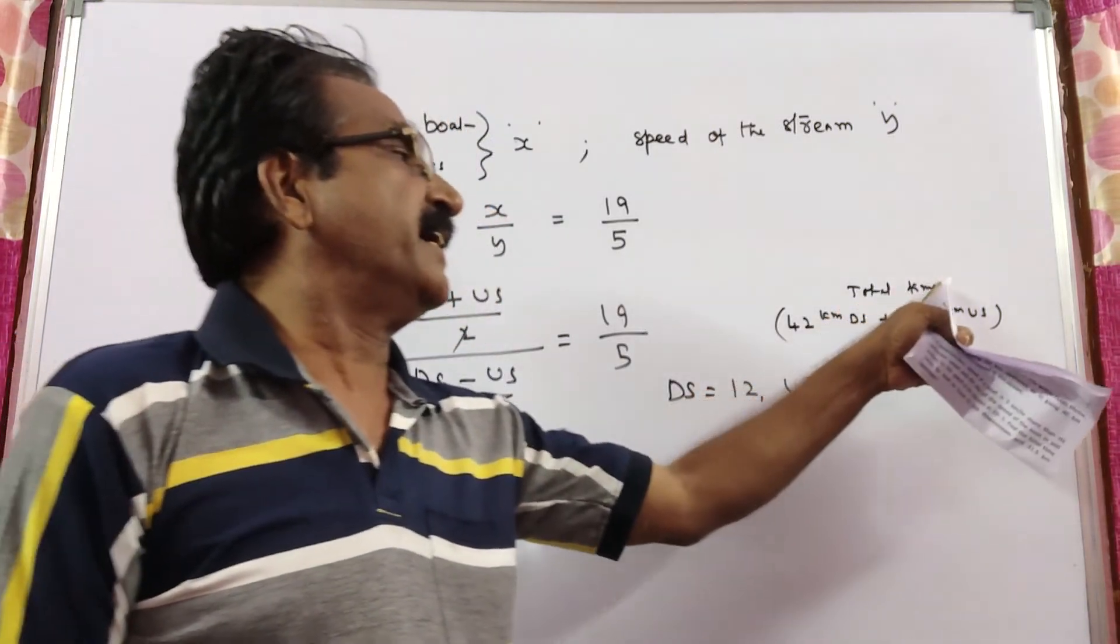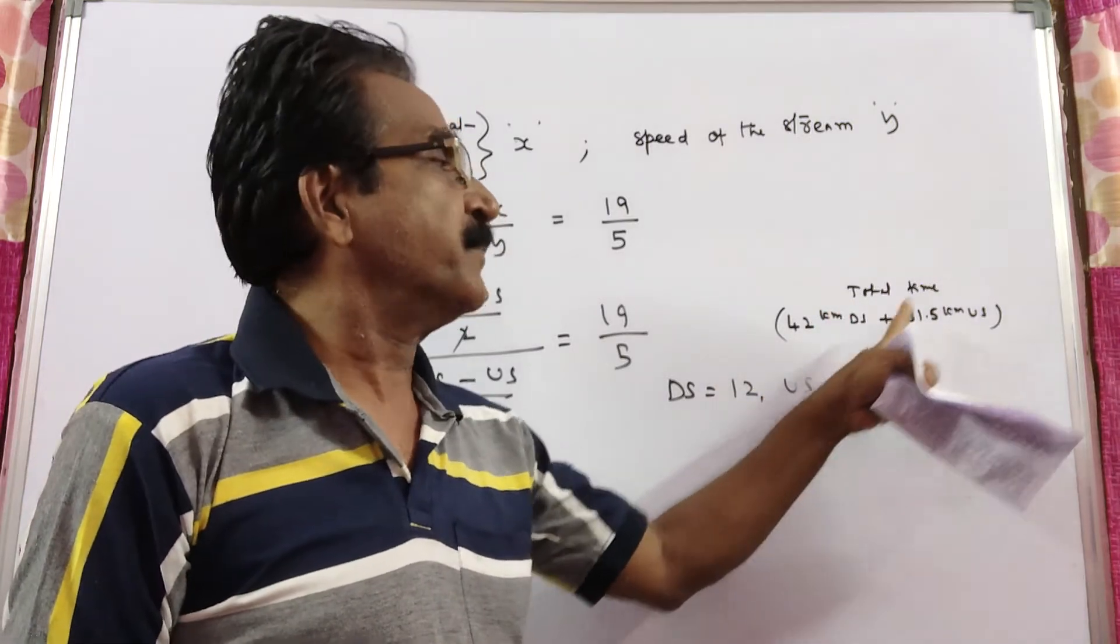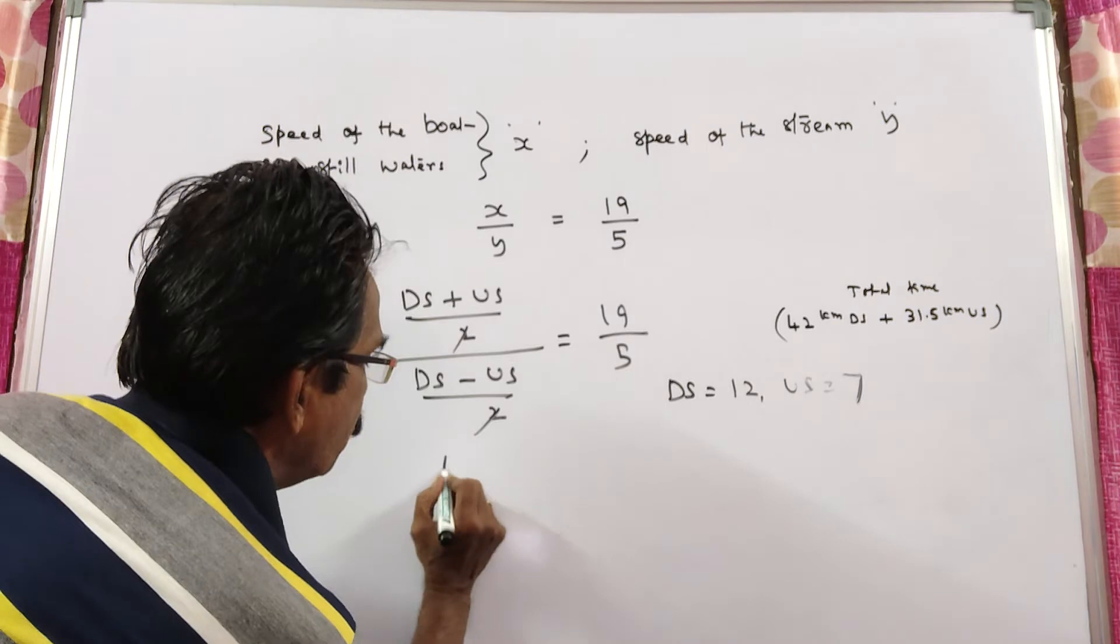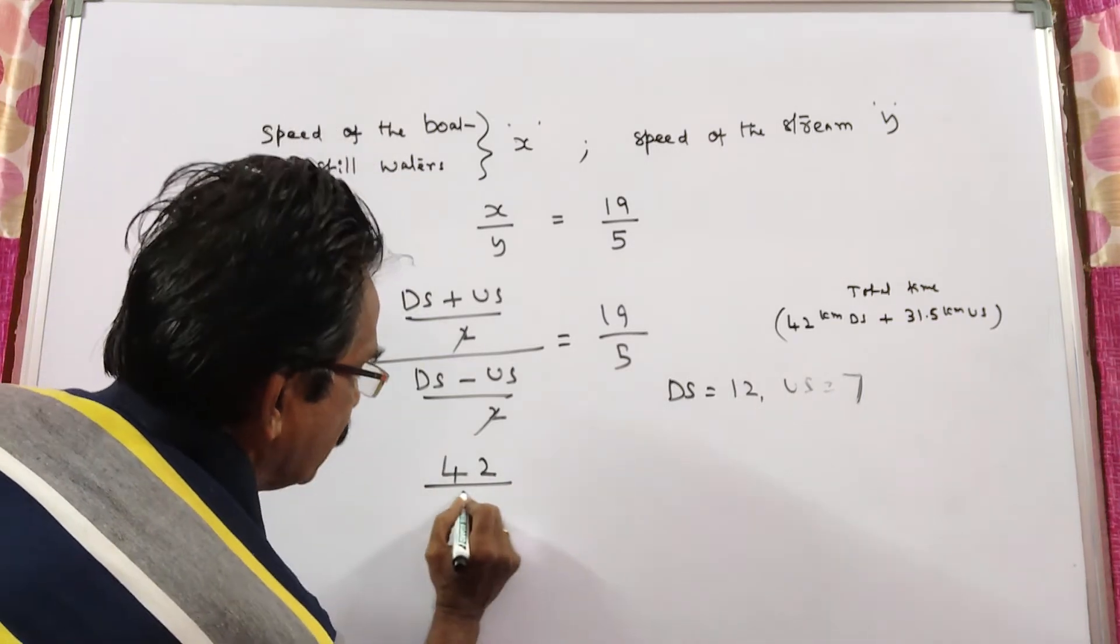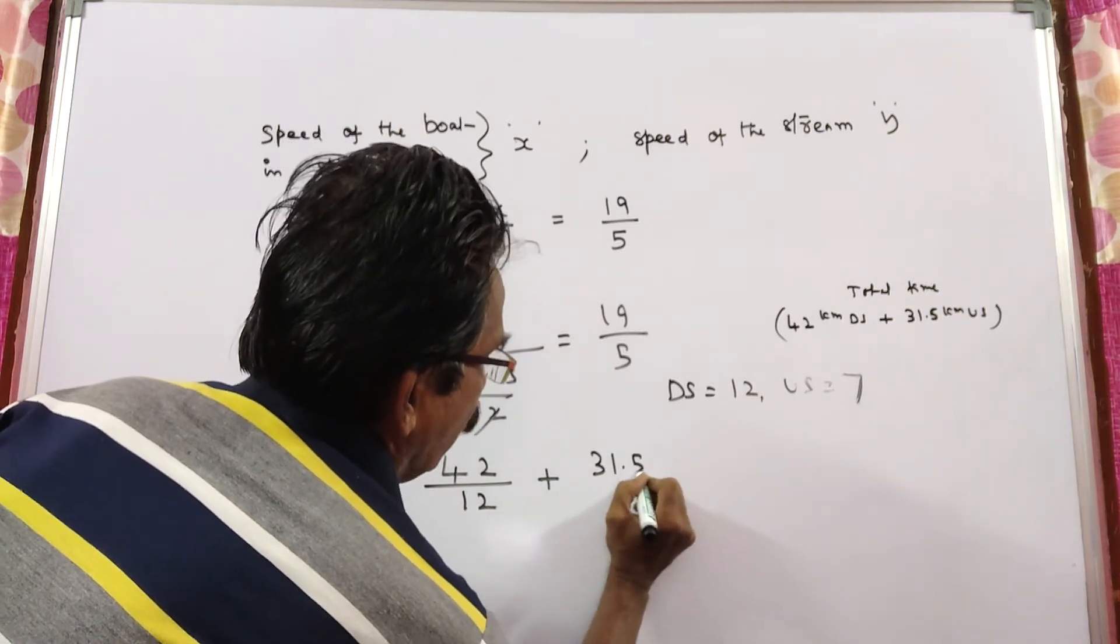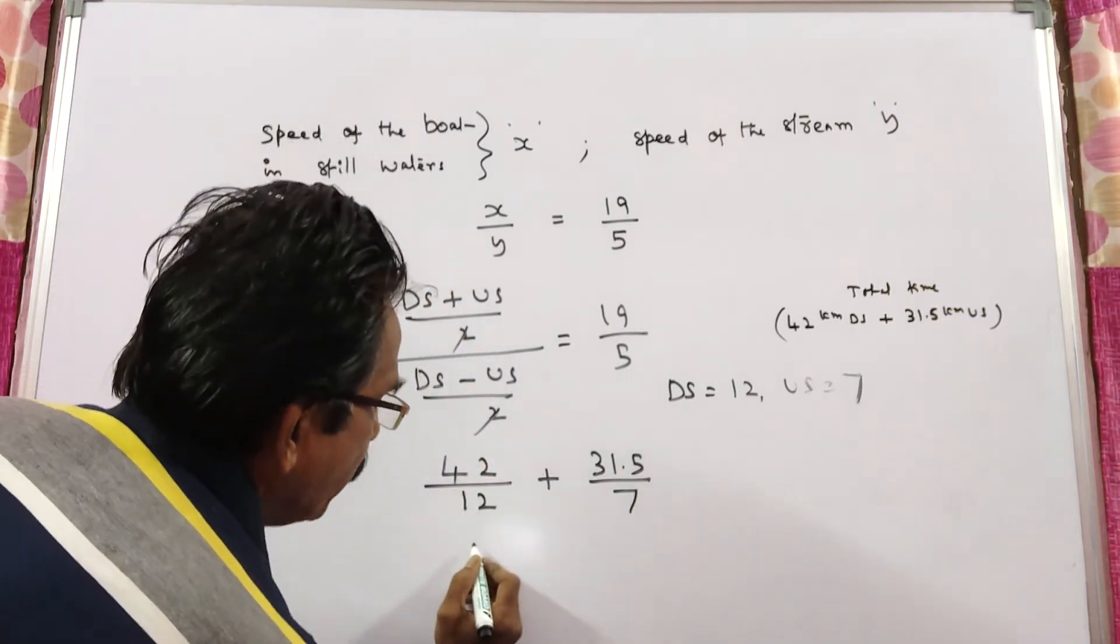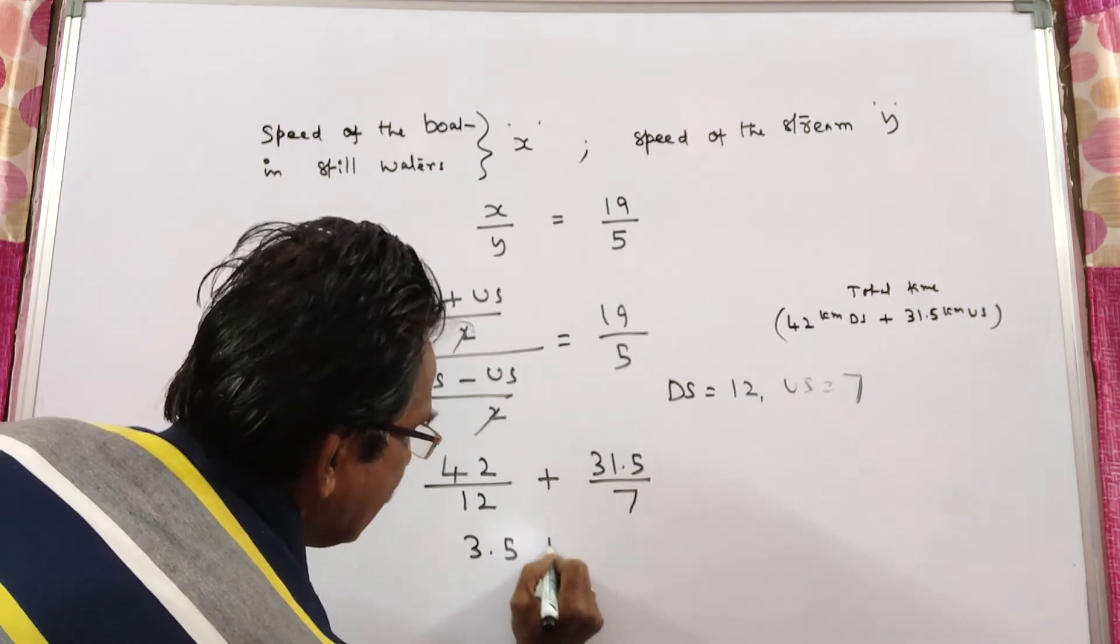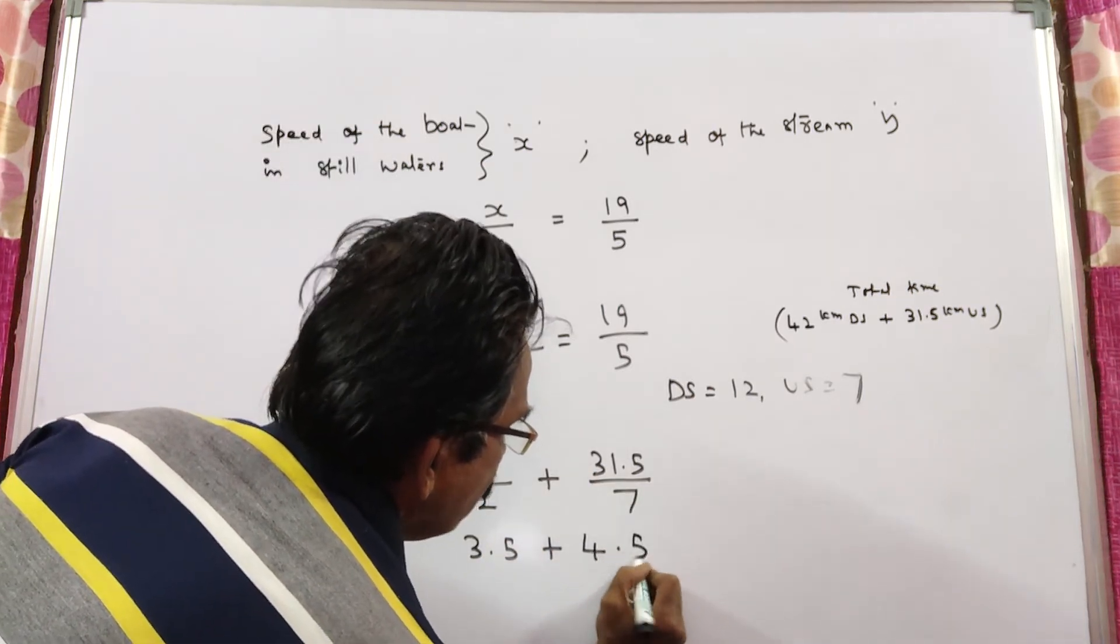Now, let us find the total time to travel 42 kilometers downstream and 31.5 kilometers upstream. 42 kilometers downstream. Downstream velocity 12 plus 31.5 kilometers upstream. So, 42 by 12 means 3.5. This is 4.5.